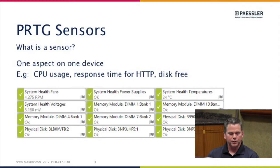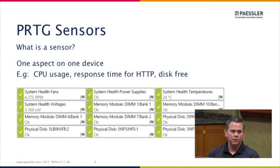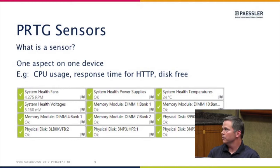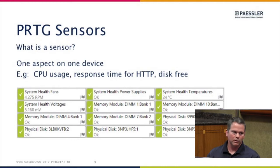The biggest thing about PRTG that customers have to get accustomed to is sensors. Everything we do within PRTG is based around the idea of a sensor. Sensors encompass everything about a device, application, or service that you're looking to monitor — really any aspect or element of monitoring. It could be anything from ping, CPU load, memory, disk space, NetFlow, to traffic. On average, a device requires 10 to 15 sensors to monitor it, so it's really an à la carte approach.